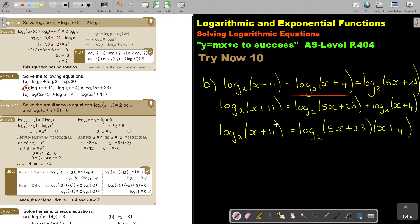Because now I can follow the product rule, because it's plus. And I'm going to have (5x plus 23) and I have (x plus 4). And now I have one log word, one log word, I can take the logs away, so I end up with (x plus 11) equals (5x plus 23)(x plus 4).